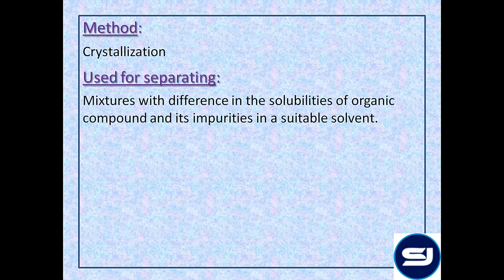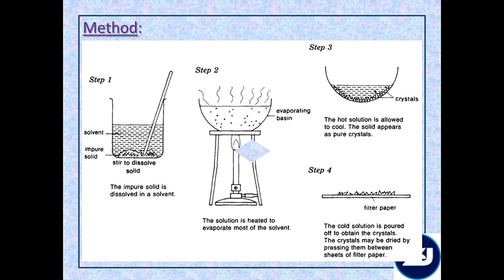The next method of purification is crystallization. Crystallization is based on the principle of difference in solubility. It is used for separating mixtures with difference in solubilities of the organic compound and its impurities in a suitable solvent. The solvent should be selected such that the organic compound to be purified is more soluble in the solvent compared with the impurity.